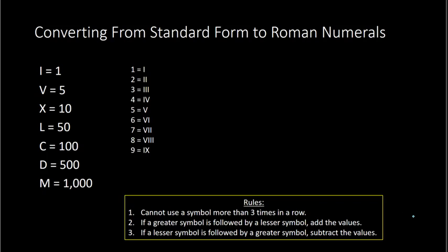Ten is just the letter X. From here for eleven through nineteen, we add ten to the previous values. So we just put an X in front of each of these numbers to get eleven, twelve, thirteen, etc. XI would be ten plus one which is eleven. XII would be twelve. XIII is thirteen. XIV is fourteen. XV is fifteen.